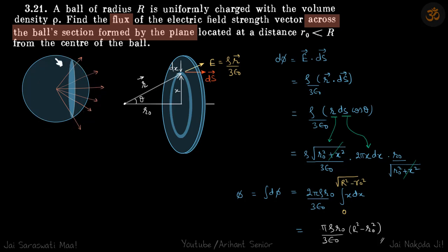So, we are given a uniformly charged sphere with charge density rho and we need to find the flux through this cross section.